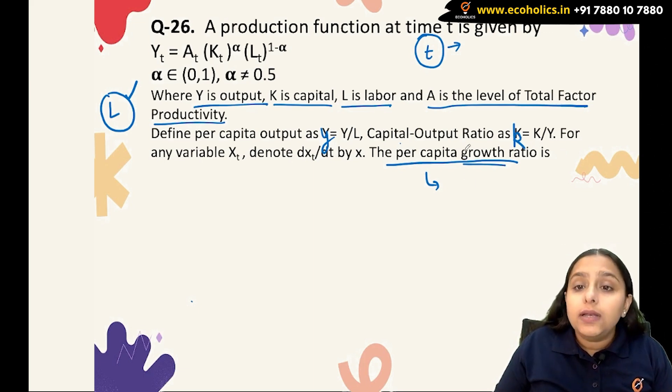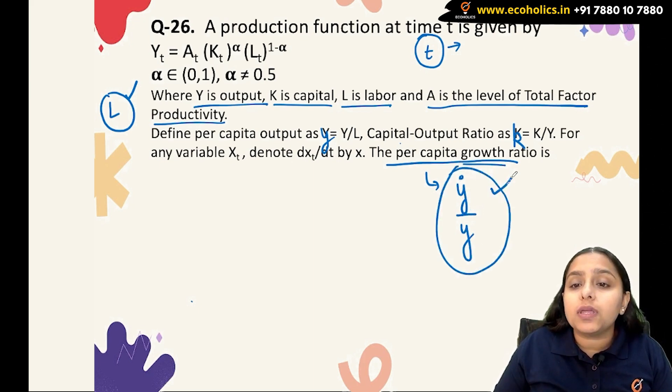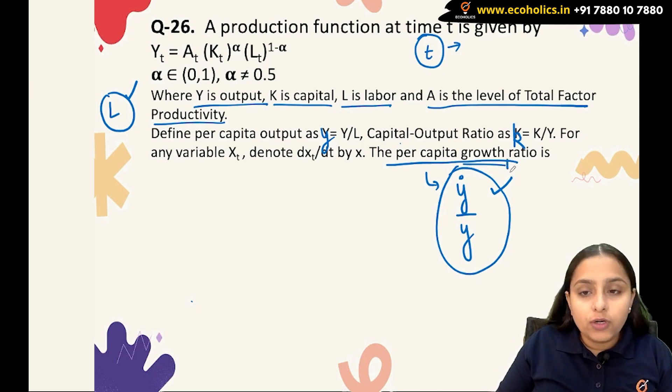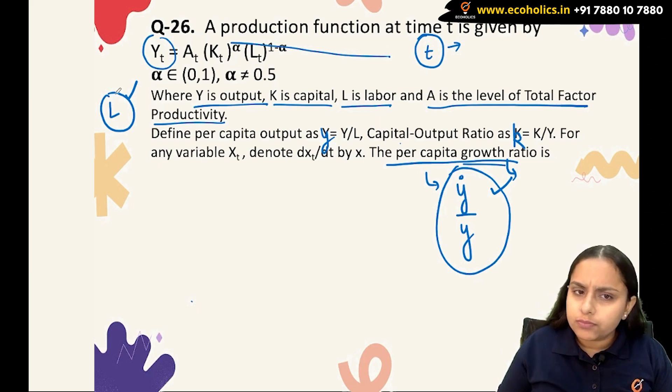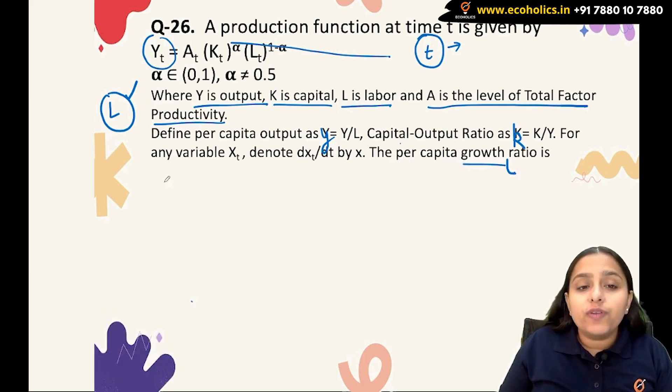Per capita growth is given by change in the variable divided by the base value of the variable. It will be given by ẏ divided by y. This gives me the per capita growth ratio of output. Since we are dealing with the production function, we are interested in measuring the per capita growth ratio.